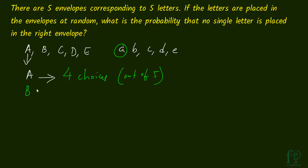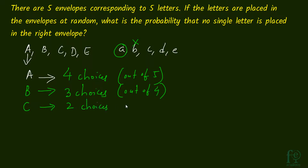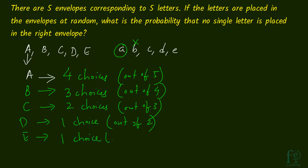What about B? B will have only 3 choices, since A has already gone to one envelope and B cannot go to that same envelope. Also, B cannot go to small b (its right envelope), so the remaining choices are 3. C will have 2 choices out of 3, D will have only 1 choice out of 2 since it cannot go to its right envelope, and E will also have only 1 choice because only 1 envelope is remaining.